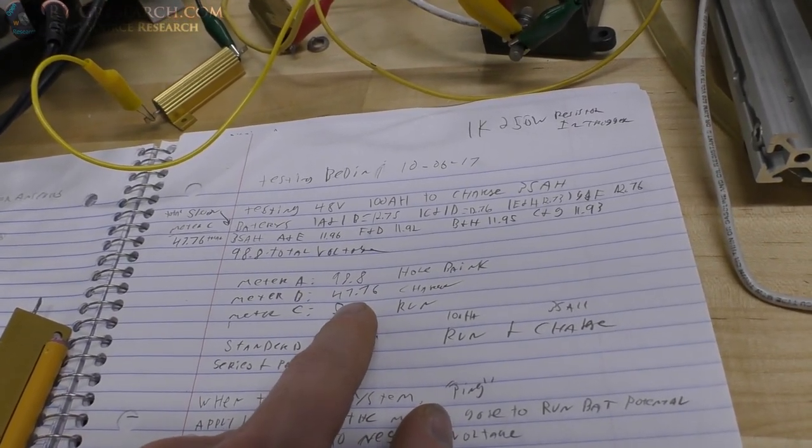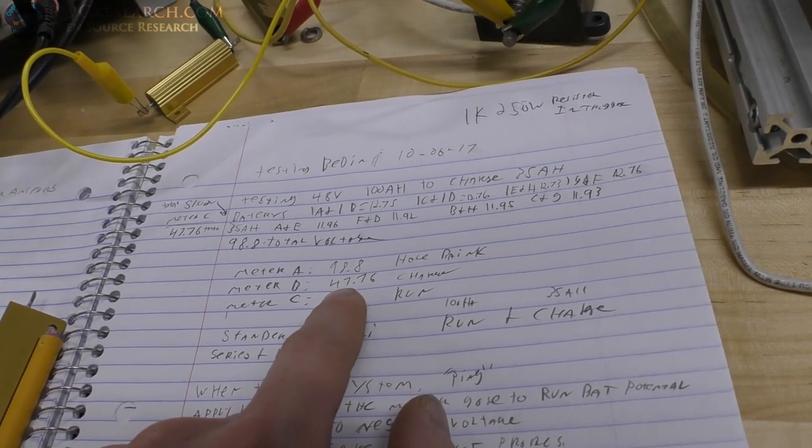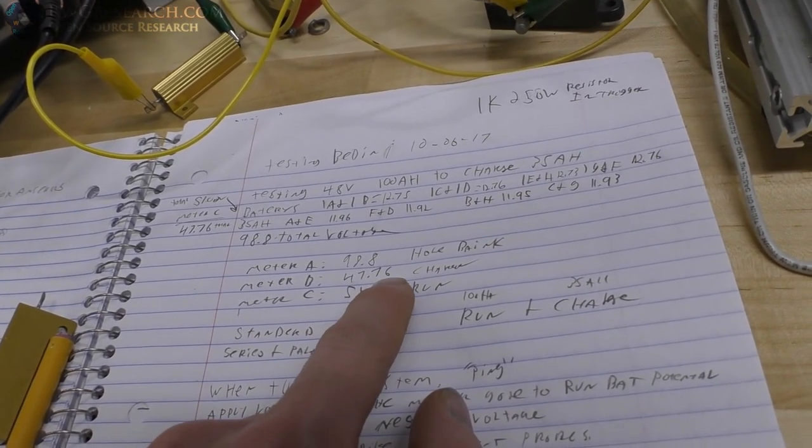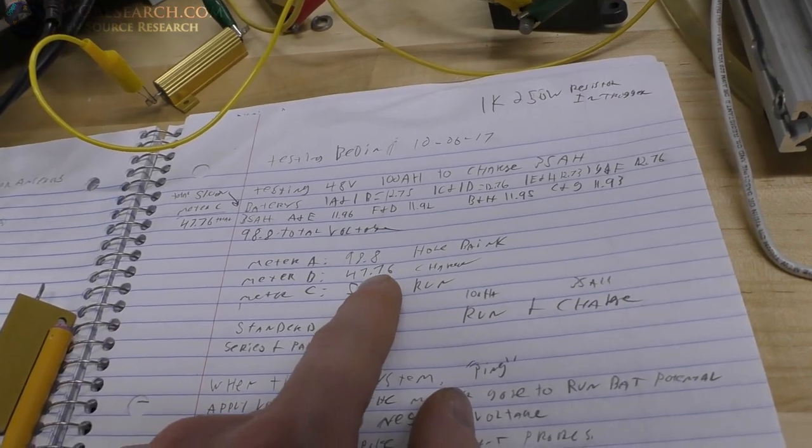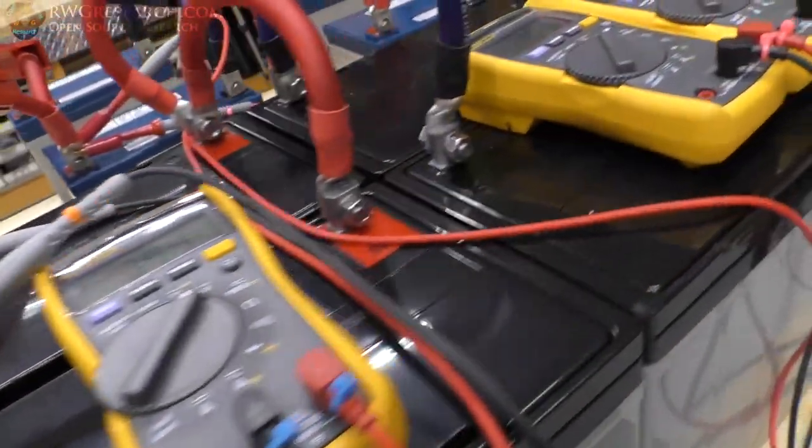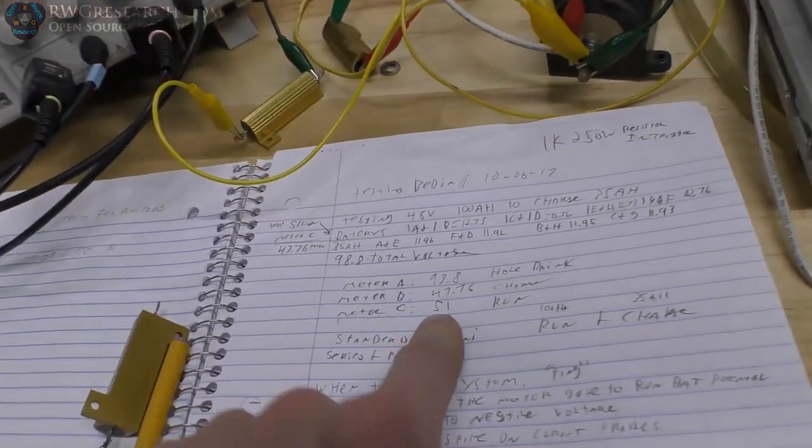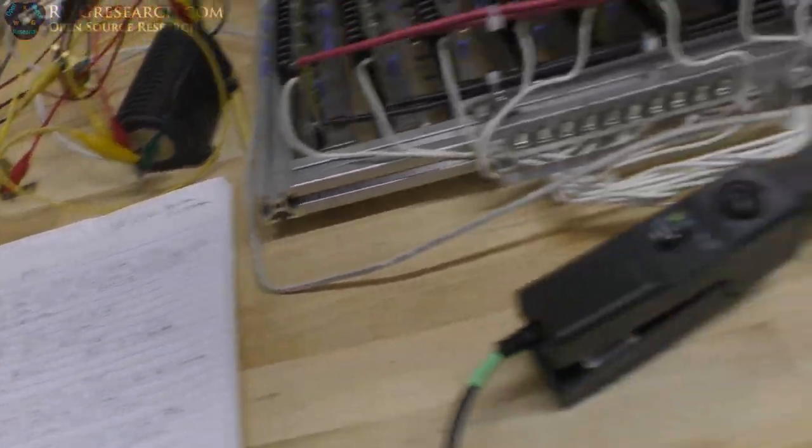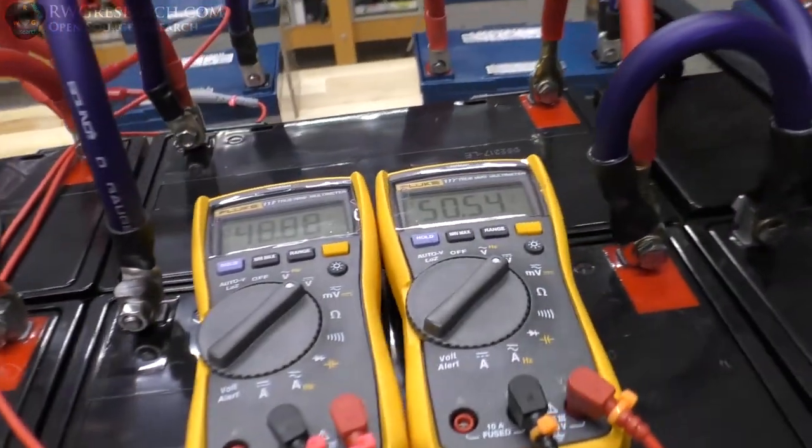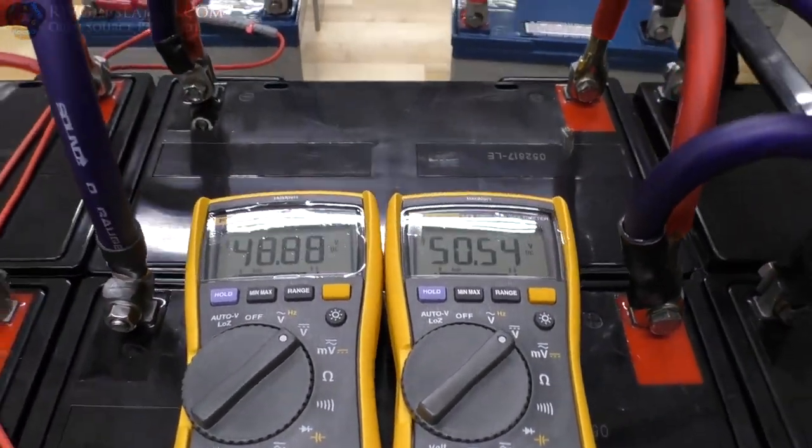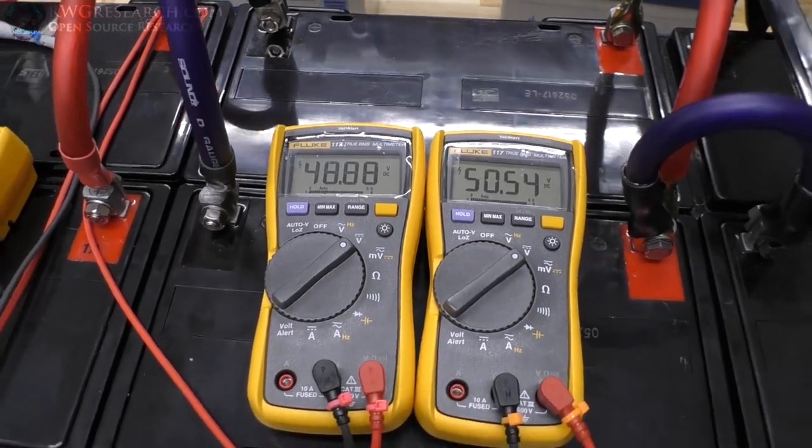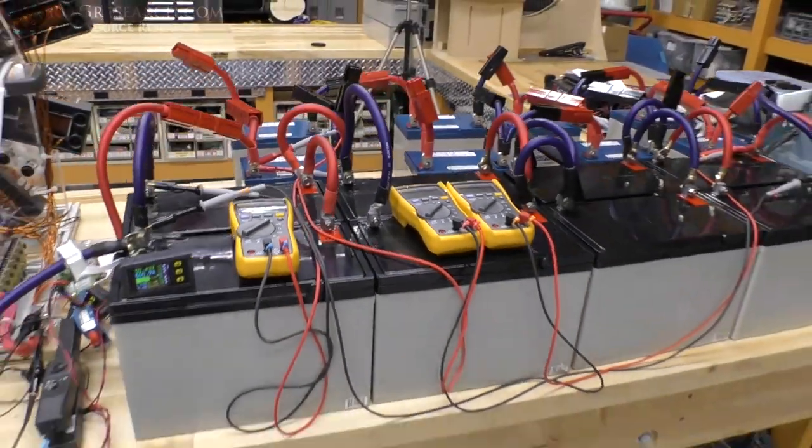We started out, the whole bank was at 98.8 so it rose a little just due to the such low voltage on the charge bank. Then the charge bank went up quite a bit already from 47.76 up to 48.88 in two hours, not too bad. And the run bank was exactly 51 volts so it's dropped about a half a volt. So we got a lot more to do.